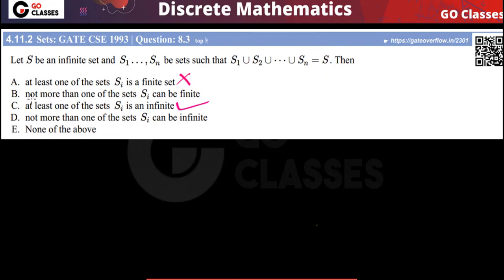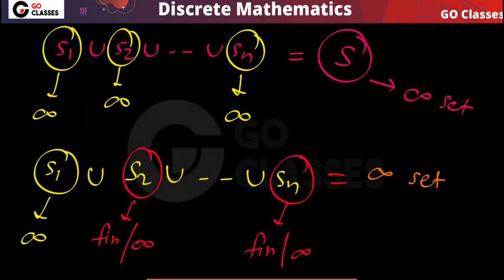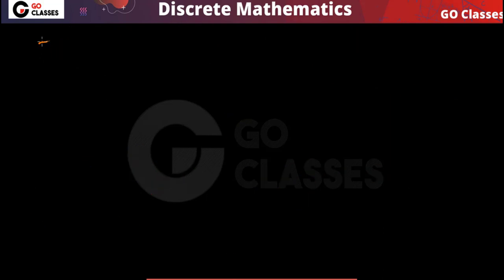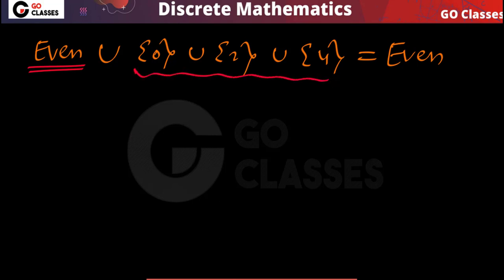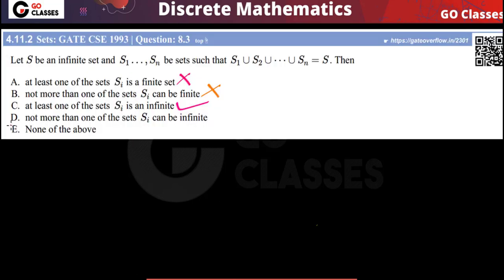Option B says not more than one of the sets can be finite — this is also wrong. If S1 is infinite, then S2 through Sn can all be finite; there is no problem. For example, set of all even numbers union a finite set still gives an infinite set. So more than one can be finite.